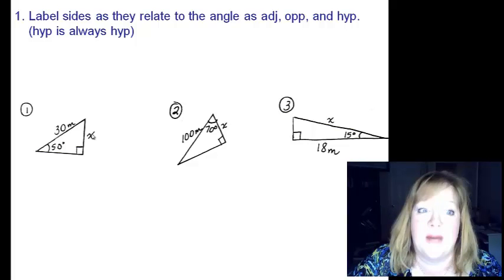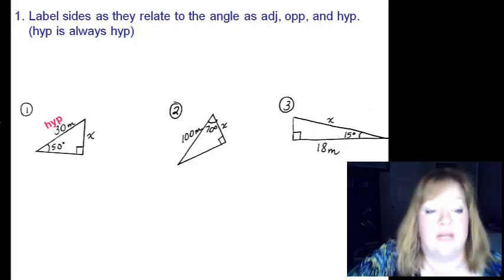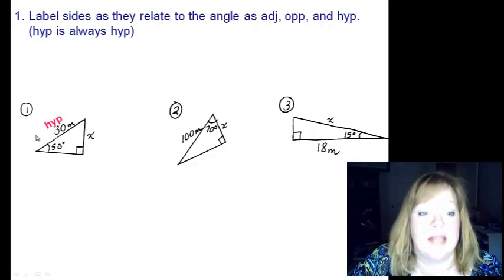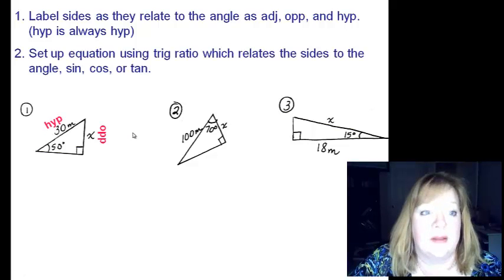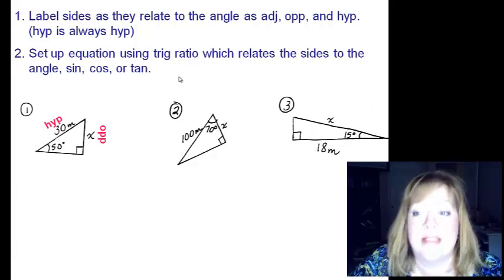I always start with the hypotenuse first. So if I look at number one, thirty is the side that's opposite of the right angle, so that's the hypotenuse. Second step, set up your equation using your trig ratio which relates the sides to the angles.